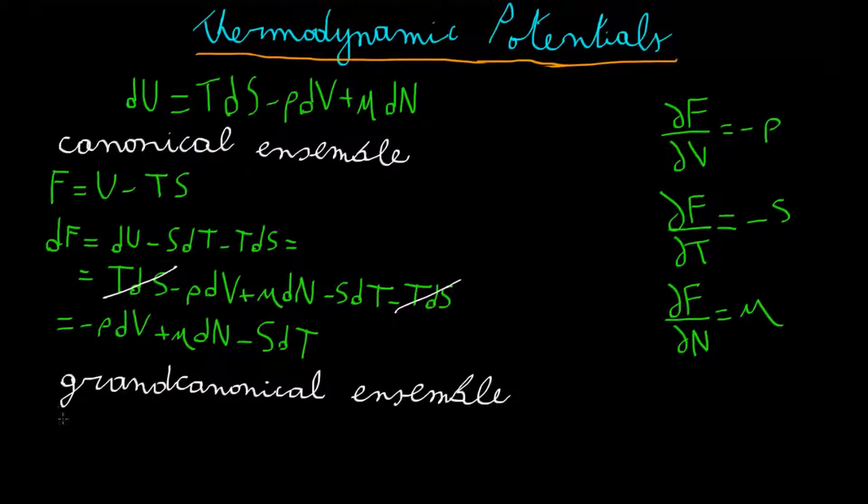To replace the dependence on N with the dependence on mu, we simply repeat the procedure which gives us the Helmholtz free energy. That is, we just apply the Legendre transform once again. We define omega equals F minus mu N, and then we compute its differential. This is d omega equals dF minus N d mu minus mu dN, again, applying the product rule on N mu.